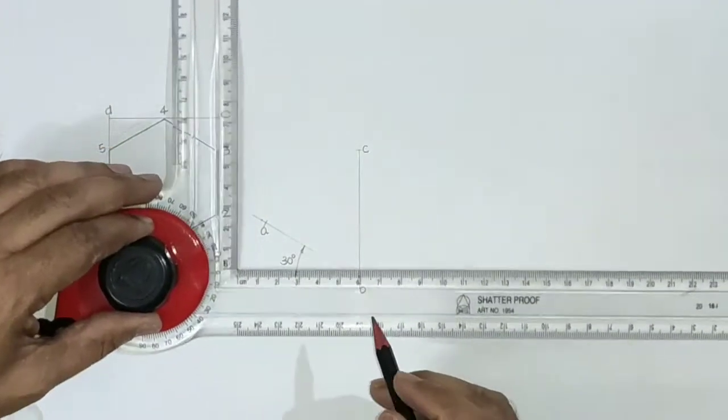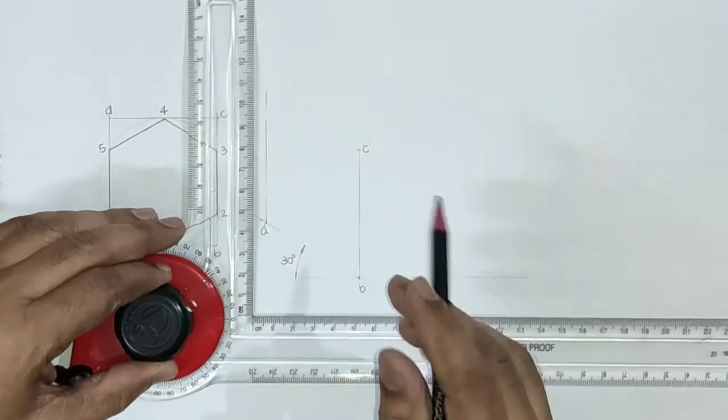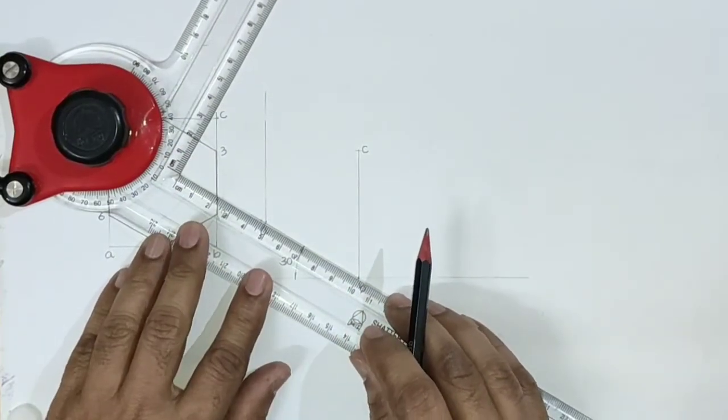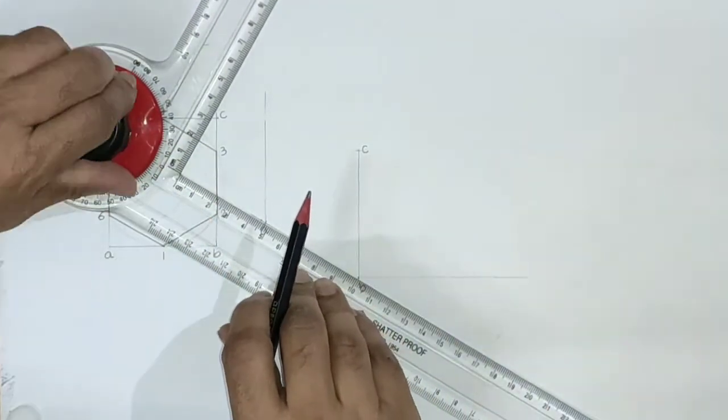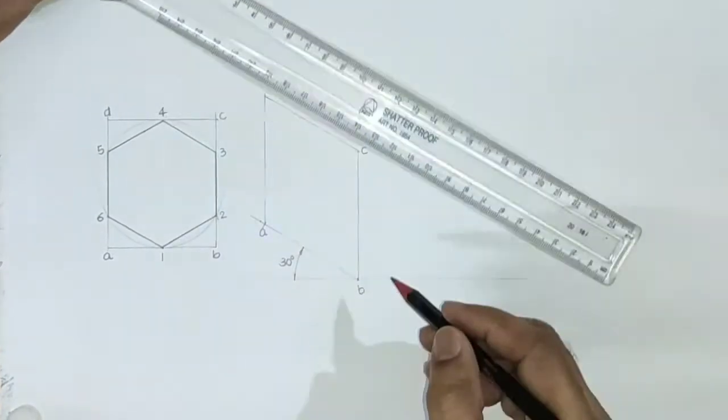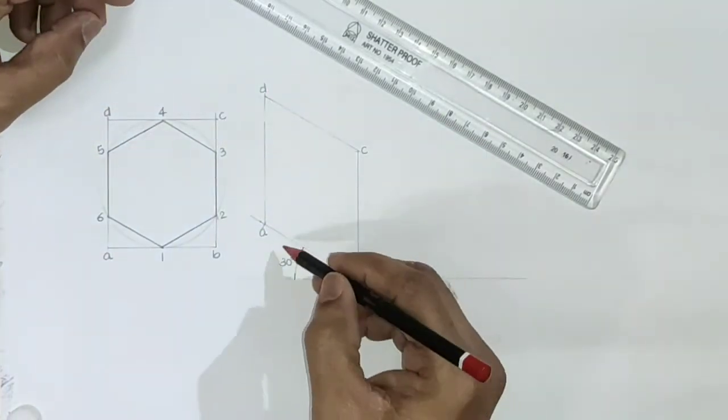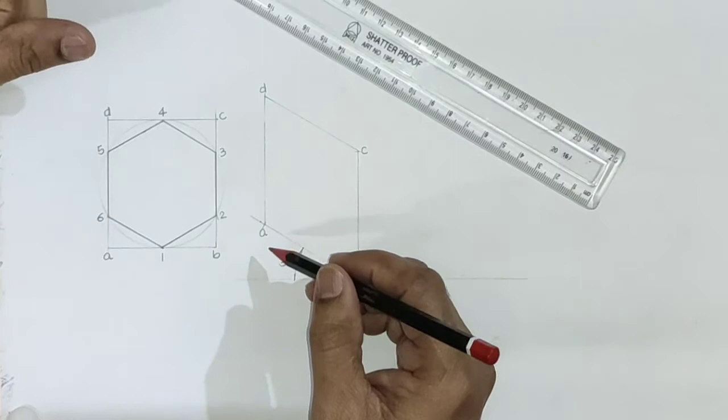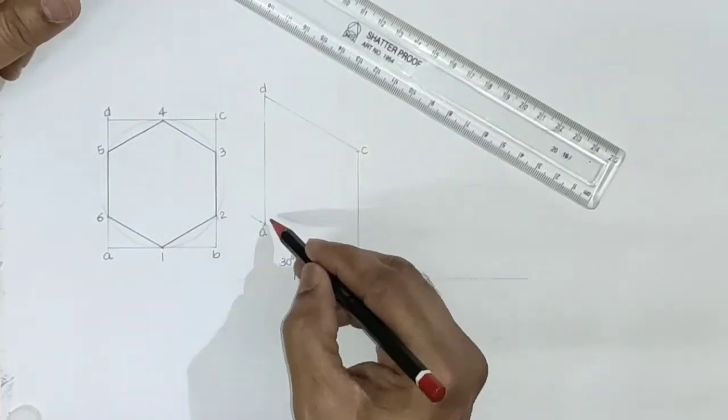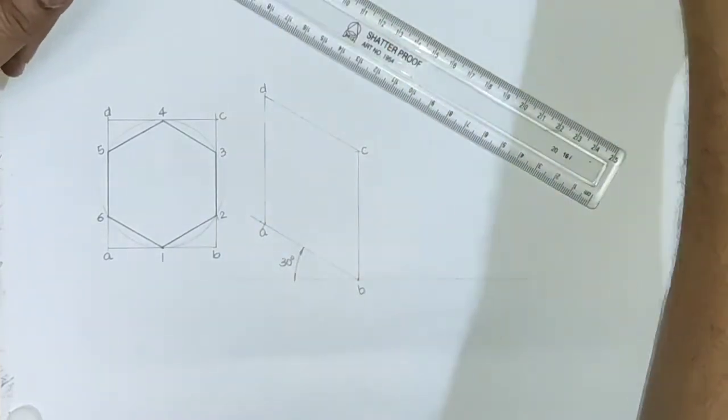Draw line passing through A, vertical line. Set drafter to this 30 degree line, then draw line parallel to this. This point is D. In this way we have constructed isometric of this rectangle ABCD as a parallelogram.